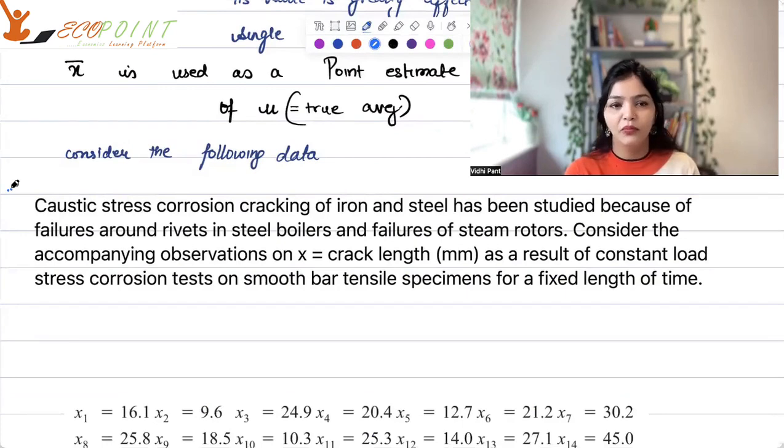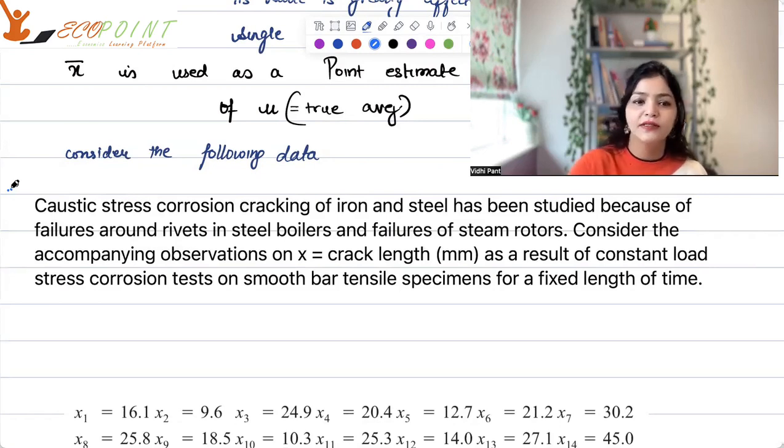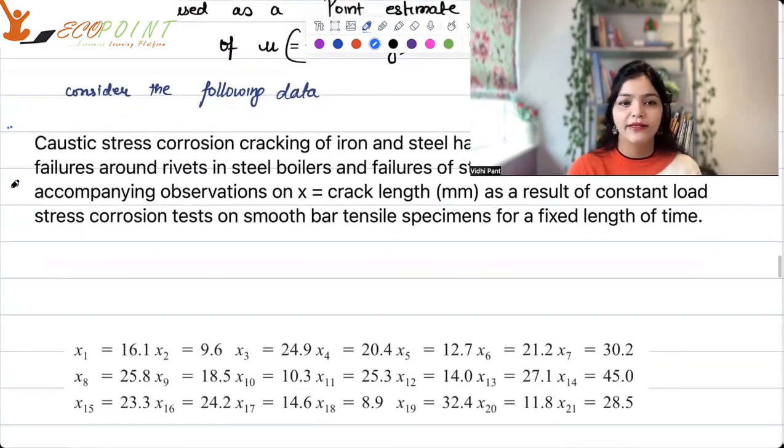An example could be that caustic stress corrosion cracking of iron and steel has been studied because of failures around rivets in steel boilers and failures of steam rotors. Consider the accompanying observation on X, which is equal to the crack length in millimeters as a result of constant load stress corrosion test on smooth bar tensile specimen for fixed length of time. So, suppose that gives us the following data. Suppose your X1 is 16.1, X2, all these are the crack lengths in millimeters.